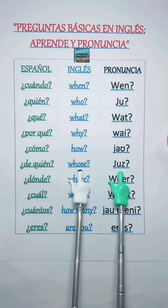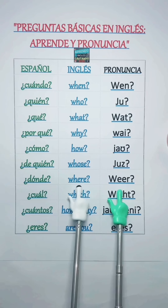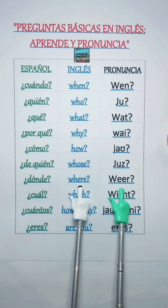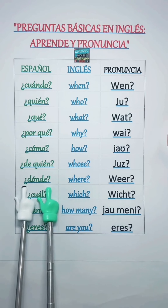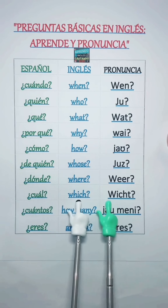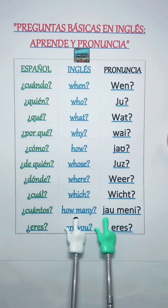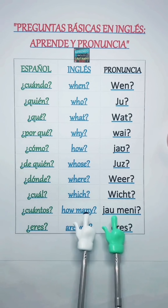No estoy seguro — I'm not sure. Yo sé — I know. No sé — I don't know. Cuando — When. ¿Quién? — Who. ¿Qué? — What. ¿Por qué? — Why. ¿Cómo? — How. ¿De quién? — Whose. ¿Dónde? — Where. ¿Cuál? — Which. ¿Cuántos? — How many.